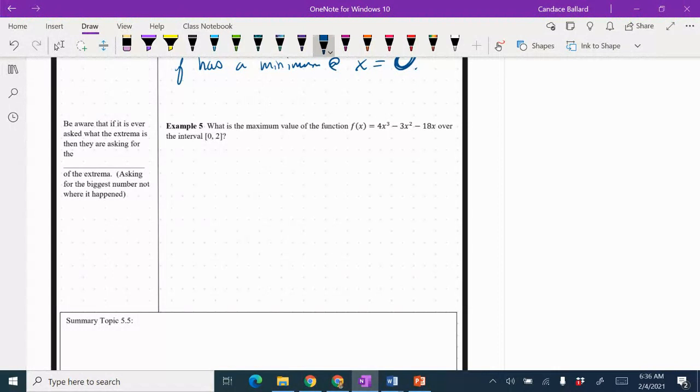So in this example, first of all, in the left-hand column, be aware that if it is ever asked what extrema is, then they are asking for the y value of the extrema, asking for the biggest number, not where it happened. So it's actually asking for the maximum value. So we're looking for the biggest y value of the function over the interval.